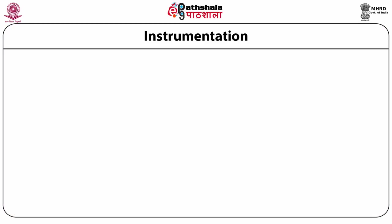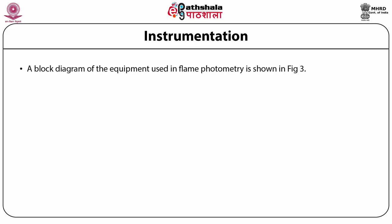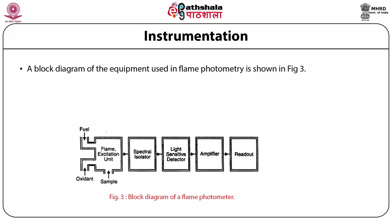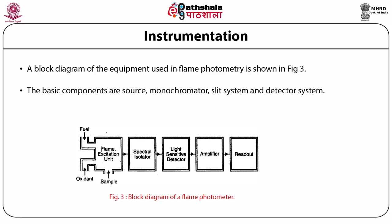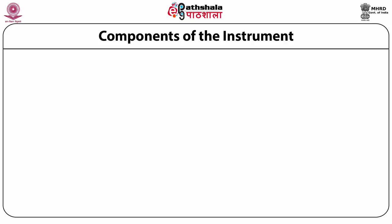Regarding the instrumentation of flame photometry: a block diagram of the equipment used is shown. The instrument possesses the same basic components as spectroscopic apparatus — source, monochromator, slit system, and detector system. Flame photometry also includes a burner used for burning the sample solution and exciting the atoms produced in the flame after burning.